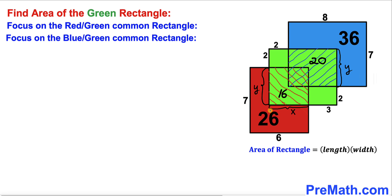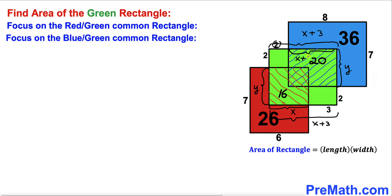Now let's focus on this part. The whole length here is x plus 3 units. Since this is a rectangle, the opposite side is also x plus 3. But we know this length is 2, so this whole length is x plus 3 minus 2, which gives us x plus 1.